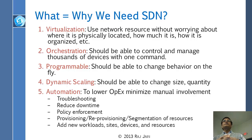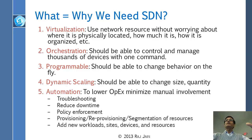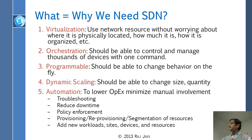Third, programmability: we need to be able to program the network without changing hardware. Previously, you'd need to bring in a box and connect it; now you should be able to do everything from your chair. Fourth, dynamic scaling: being able to change size and quantity. Fifth, automation: minimizing the number of people involved — troubleshooting, finding bugs, reducing downtime, policy enforcement, provisioning, reprovisioning — all handled by a program, not a human. That reduces OPEX, operational expenses.